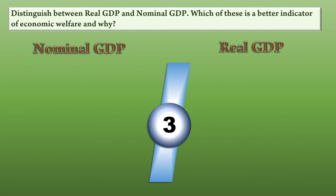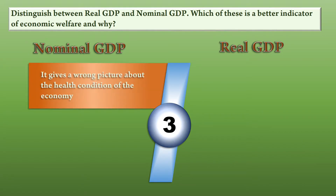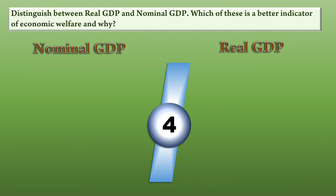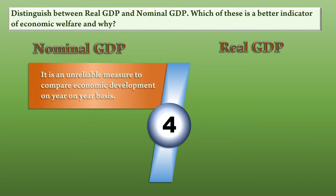Third, Nominal GDP gives a wrong picture about the health condition of the economy. Real GDP gives a true picture about the health condition of the economy. Fourth, Nominal GDP is an unreliable measure to compare economic development on a year-on-year basis.